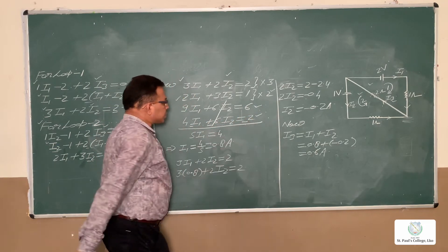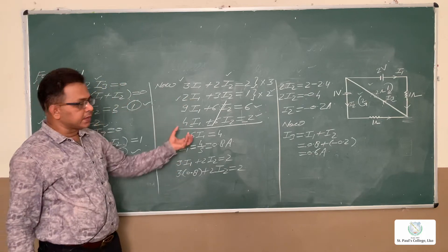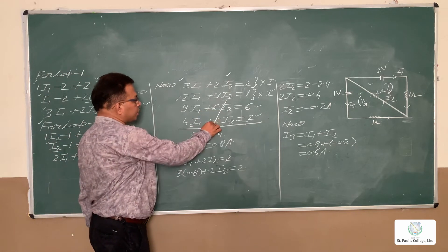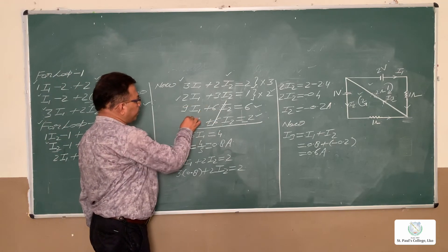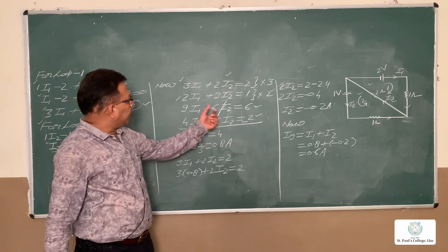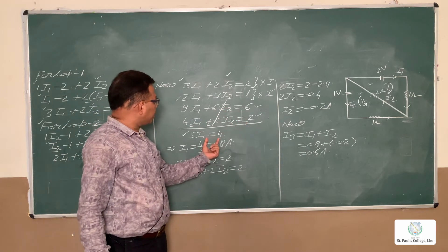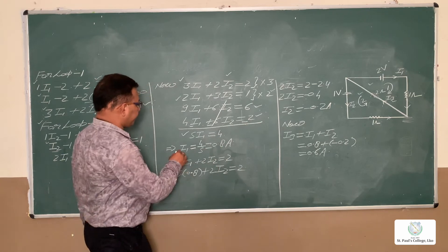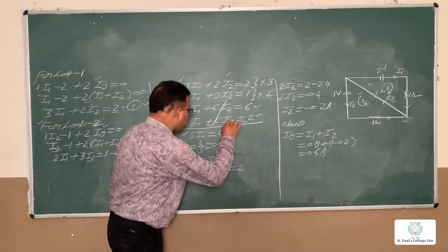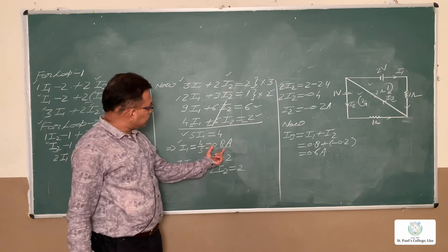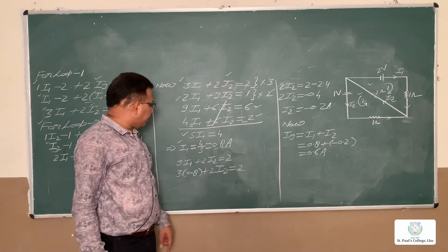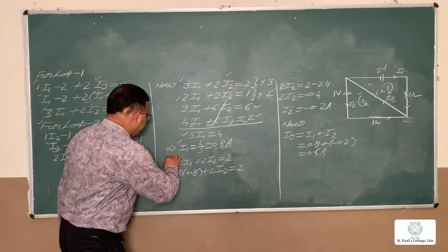Subtracting the two equations, the 6·I2 terms cancel out. We get 9·I1 minus 4·I1 equals 5·I1, and 6 minus 2 equals 4. Therefore I1 equals 4/5, which gives I1 equals 0.8 ampere.